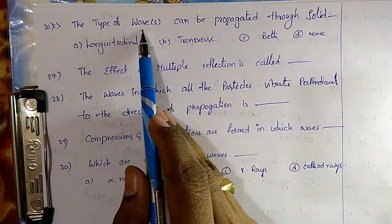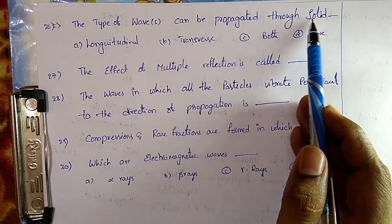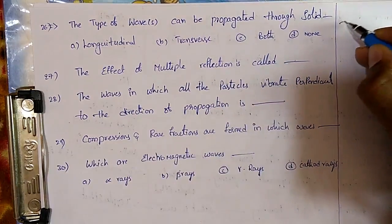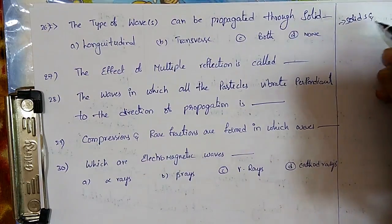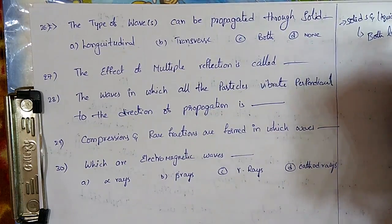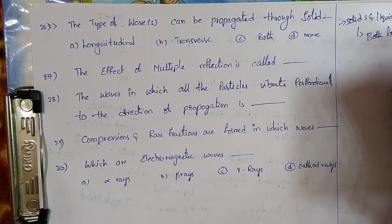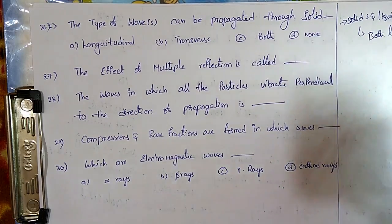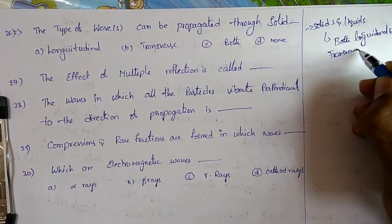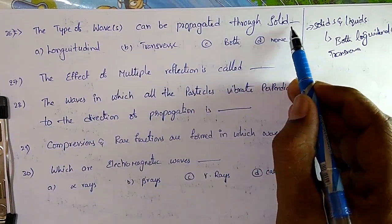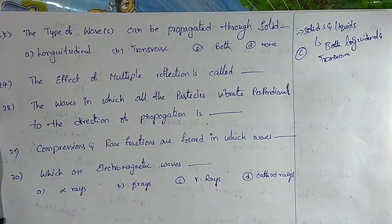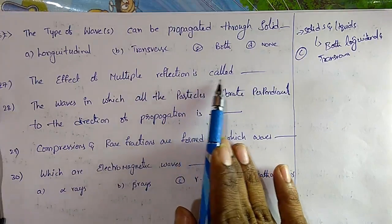Question 26: The type of waves that can be propagated through solids — in solids and liquids, both longitudinal and transverse waves can be transmitted. So the answer is C, both longitudinal and transverse.